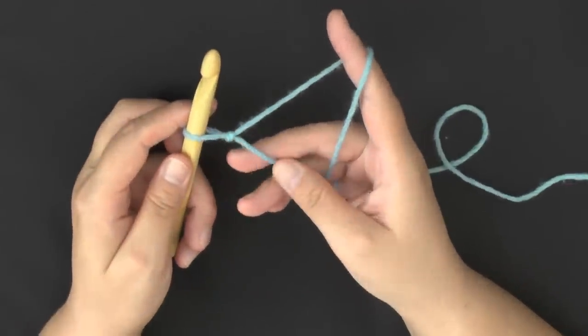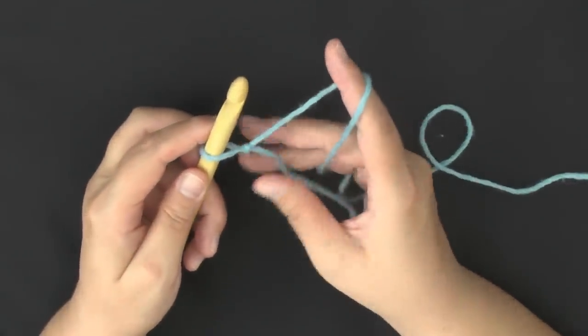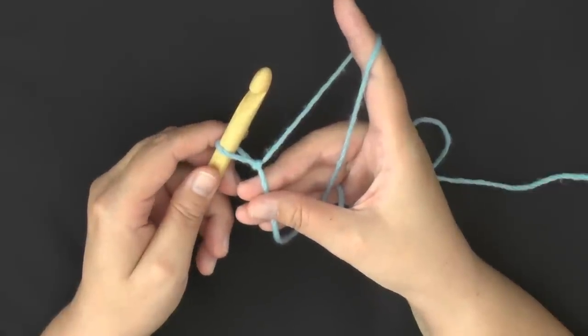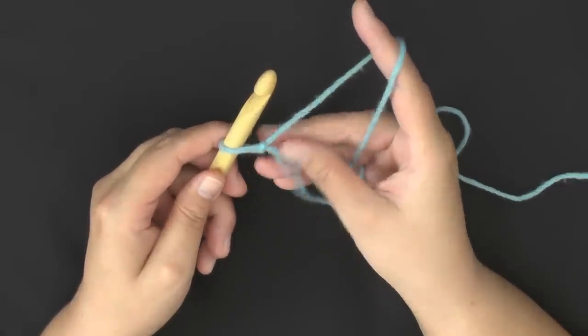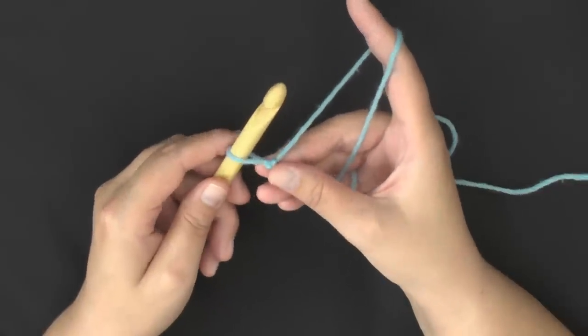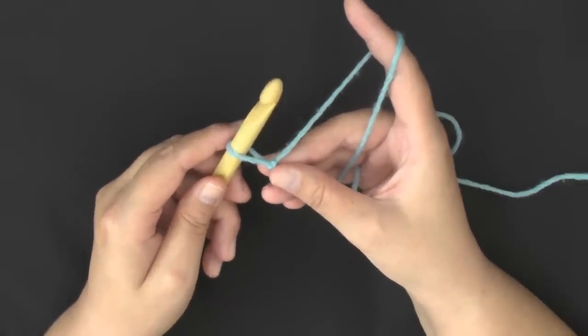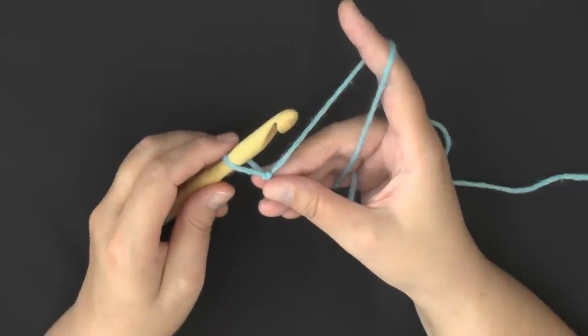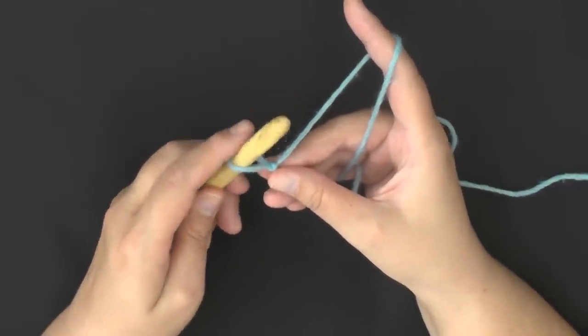Now I usually hold my tail here to help control my loop, and later on it will become your project, so you'll always be holding onto your project. And now this is where you want to start pulling your yarn through your loop and start to crochet.